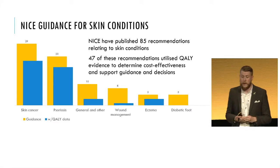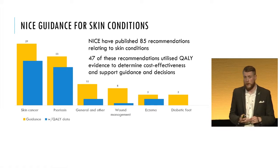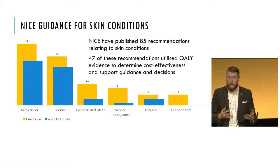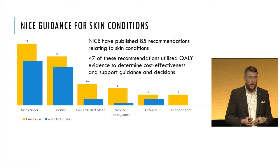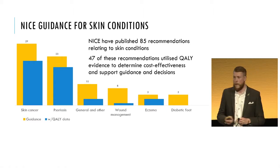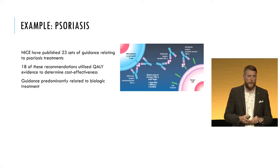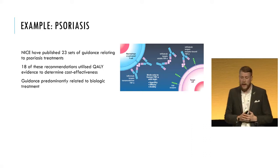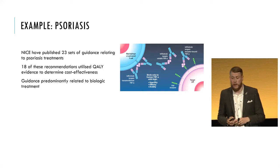If we look at NICE guidance for skin conditions, they've published 85 recommendations relating to skin conditions, 47 of which have utilised QALY evidence to help determine whether the treatment or service was cost-effective, supporting their decisions on whether something should be incorporated into typical NHS practice. The majority of these recommendations have been relating to skin cancer and psoriasis, with a few relating to other skin conditions, wound management, eczema, and diabetic foot. Psoriasis costs the NHS about £80 million per year in terms of treating patients, and NICE has published 23 sets of guidance relating to psoriasis treatments, 18 of which have incorporated QALY estimates — predominantly related to biologic treatments.